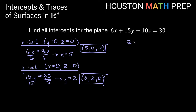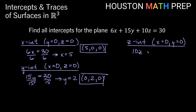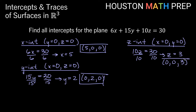Let's go ahead and now do our z-intercept. That will be when x and y are both 0. Setting x and y equal to 0 zeros out the first two terms, leaving us with just 10z is equal to 30. Dividing by 10, we get z is equal to 3. Combining that with x and y both being 0, we get the z-intercept is (0, 0, 3).